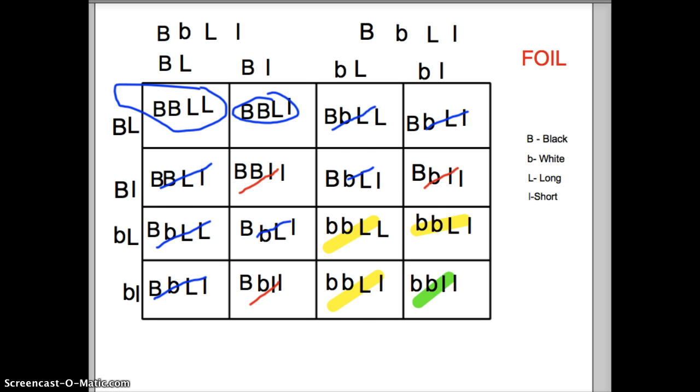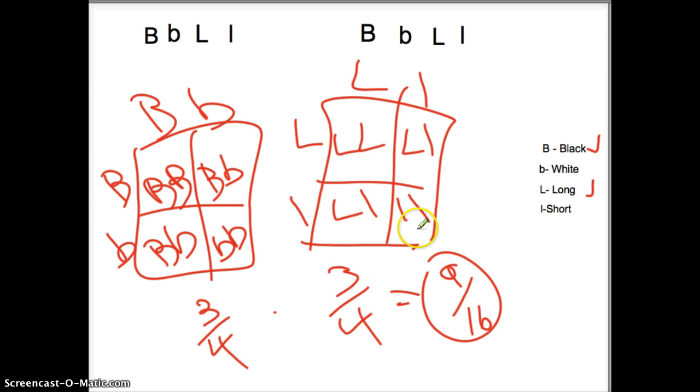So if I asked you how many were black and long, you can just do two different Punnett squares. And a lot of people find this way to be a lot easier. It's shorter, for sure. It just involves some math. So you find three out of four here are black. Three out of four here are long. So then you multiply them together. And you get nine out of 16 are black and long.